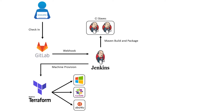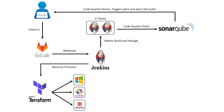In case of any failure in the build step, the pipeline will be aborted, and the deployment package is archived on Jenkins for future use. In the next stage, Jenkins uses the SonarQube scanner plugin for continuous inspection of code quality, to perform automatic reviews for static analysis of code to detect bugs, code smells, and security vulnerabilities. SonarQube offers reports on duplicated code, coding standards, unit tests, code coverage, code complexity, comments, bugs, etc. When the code doesn't meet the quality standards, an alert email is triggered to the development team and the pipeline will be aborted.